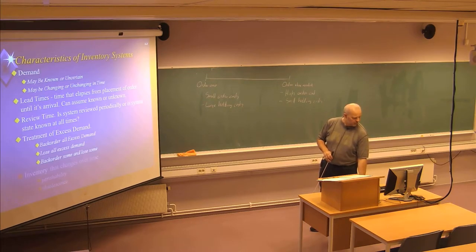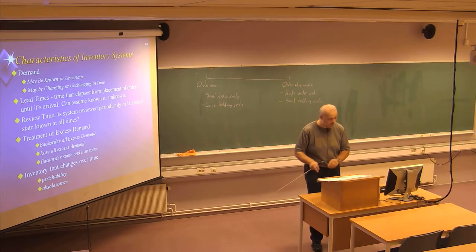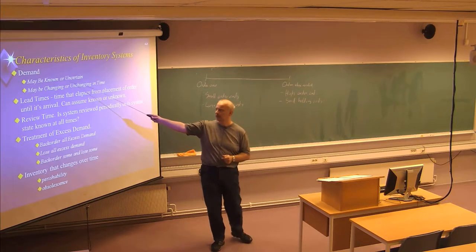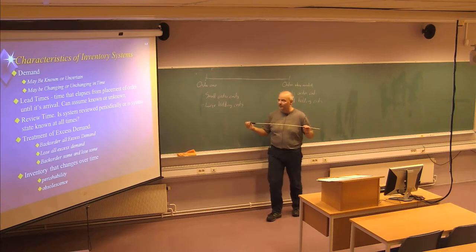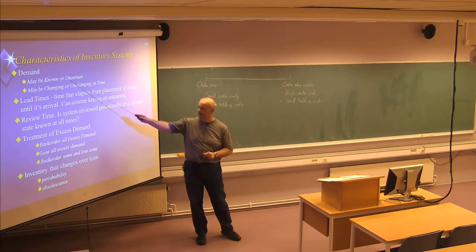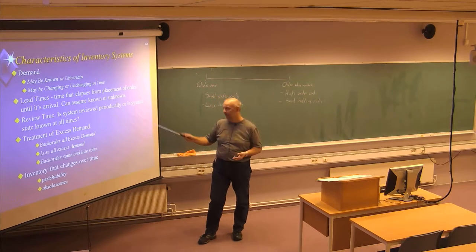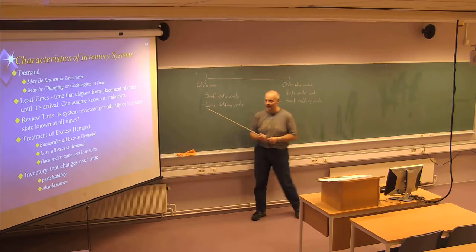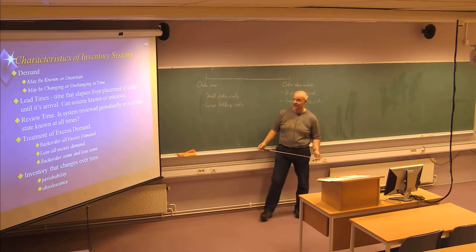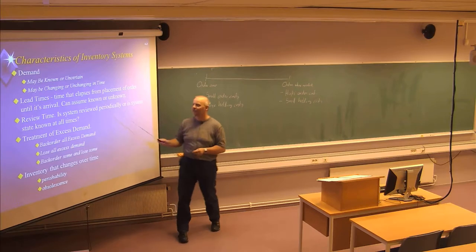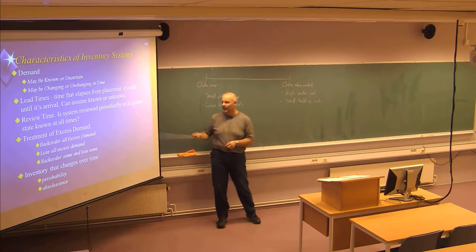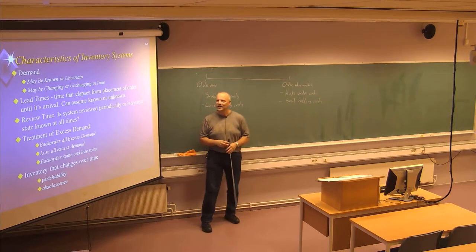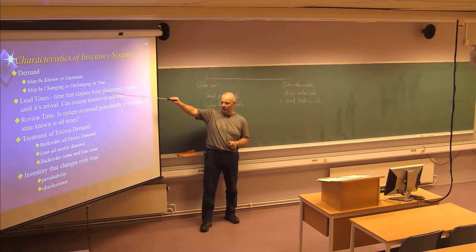Let's talk about the characteristics of an inventory system. The demand might be known at a fixed rate or uncertain — that is one characteristic which will decide which model of inventory control you should use. The demand might also be changing or constant over time, which you need to deal with when making an inventory strategy. Lead time is another characteristic: the time from when you place an order until the goods arrive at your stock. Sometimes lead time is known exactly; sometimes there is uncertainty.